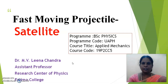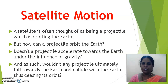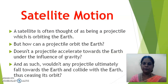A satellite is thought to be a projectile because it is a high-speed projectile — a satellite is often thought of as being a projectile which is orbiting the earth. But how can a projectile orbit the earth? Doesn't the projectile accelerate towards the earth under the influence of gravity? And as such, wouldn't any projectile ultimately fall towards the earth and collide with it, thus ceasing its orbit? These many questions arise in our mind.